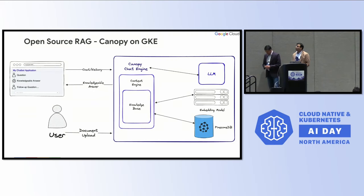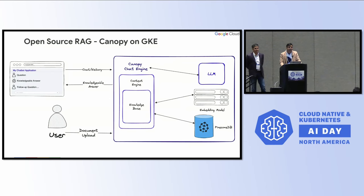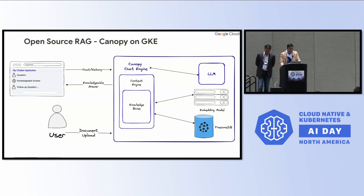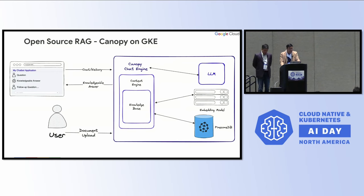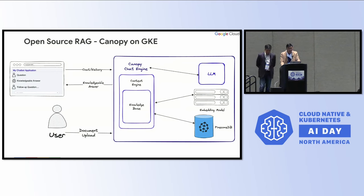For the demo, we used an open source product called Canopy and a Pinecone database. Canopy is a package — a web service or library — which you can use to build your own custom applications. It has three sections: the knowledge base, context engine, and the Canopy chat engine. The knowledge base prepares your data for the workflow — it automatically chunks and transforms your text data into text embeddings.